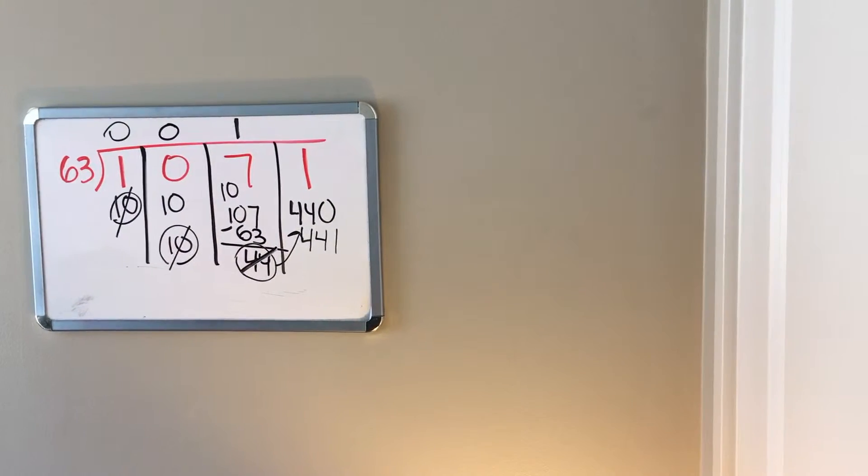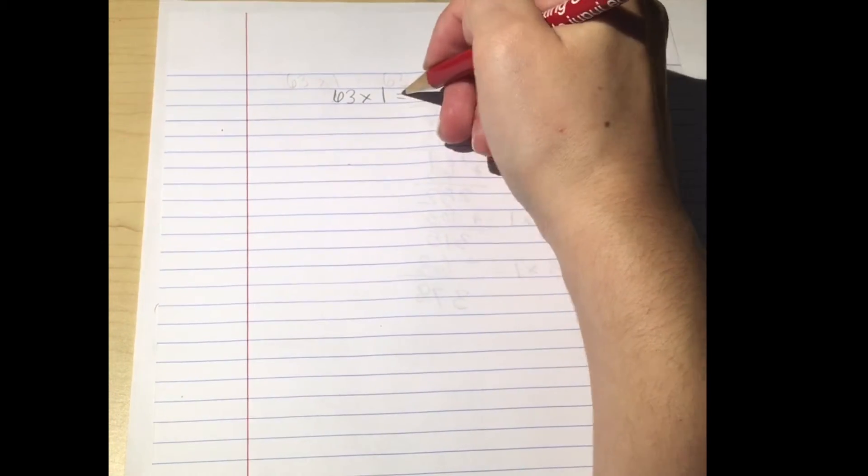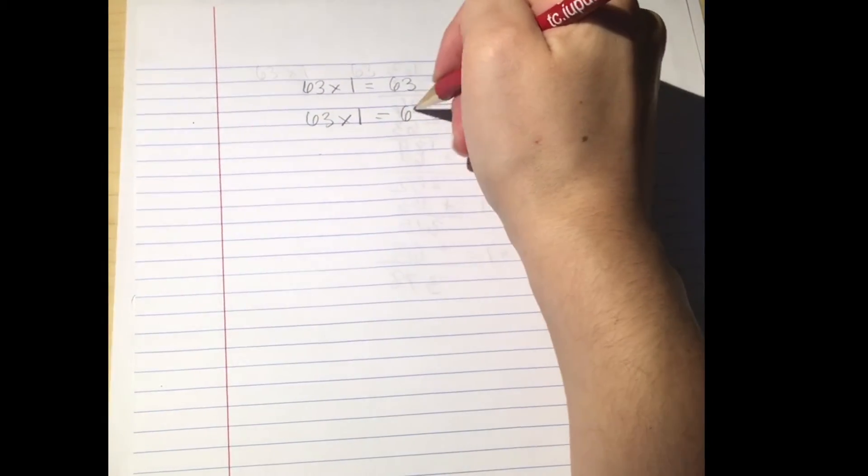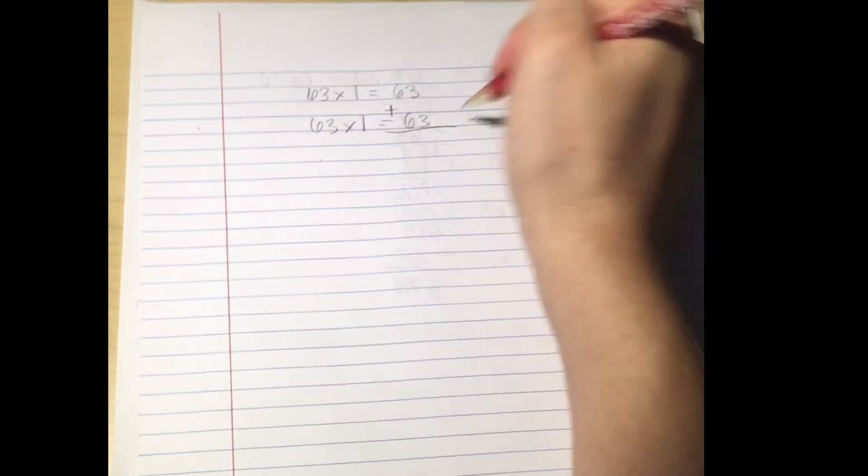Now we've got to distribute the ones. So if you're not sure what number 63 can be multiplied by to get 441 evenly, then we can break up this problem a different way. So let's do something that we know. We know that 63 times 1 is 63, so we can just keep on adding 63. So let's just add those two numbers together. When we do that we get 126.